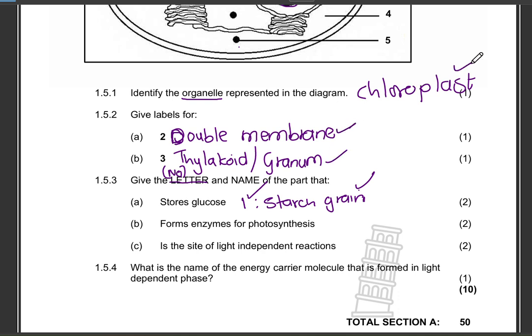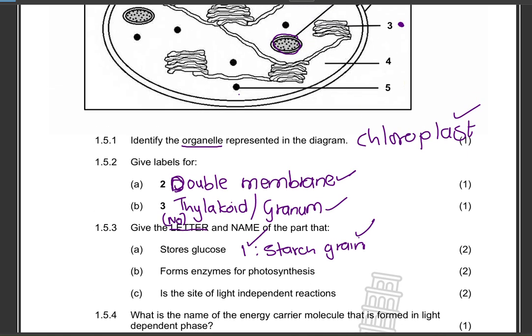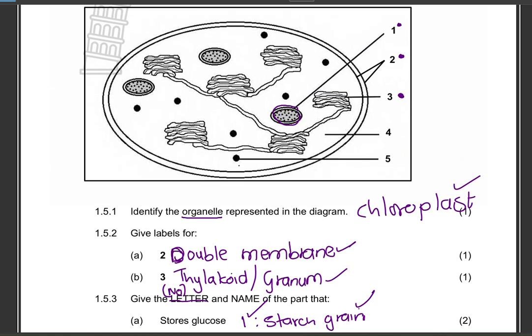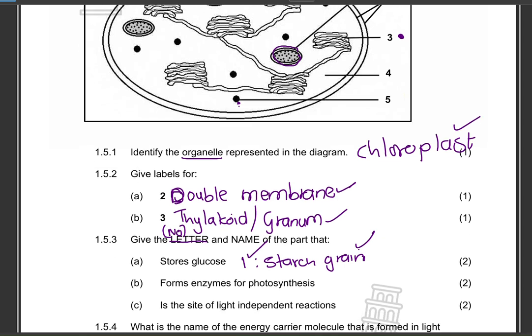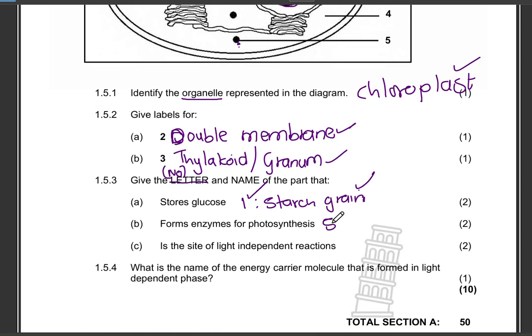When marking, each mark is awarded independently — one mark for the number and one mark for the name. Now, give the number and name of the part that forms enzymes for photosynthesis. Enzymes are proteins, so those are formed in the ribosome — that is number five, and the name is ribosome.